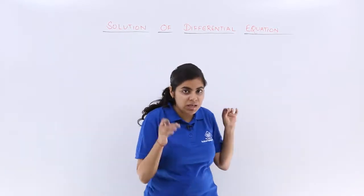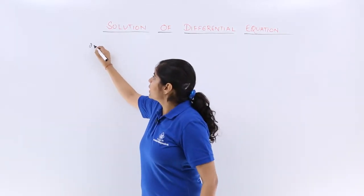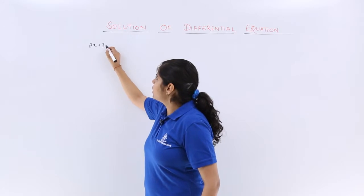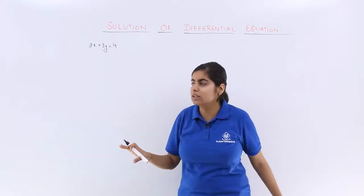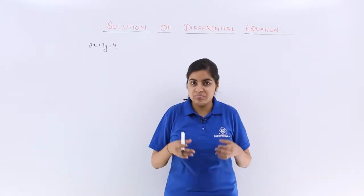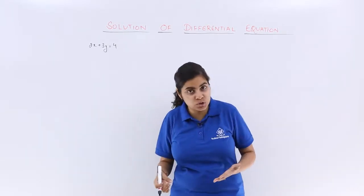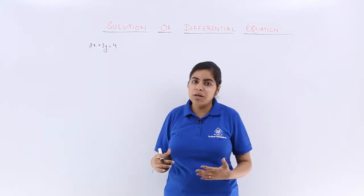Let me tell you with an example. I have a linear equation say 2x plus 3y is equal to 4. Very randomly I have written. This is a linear equation in two variables x and y. How did we get the solution? We saw that there are two variables, so we need one more equation.